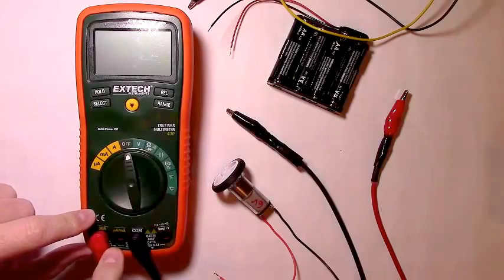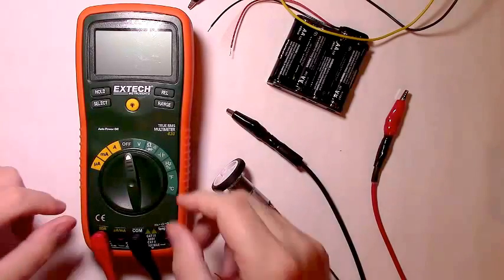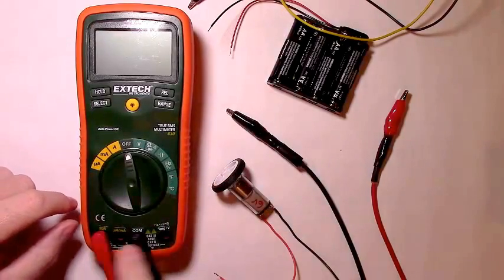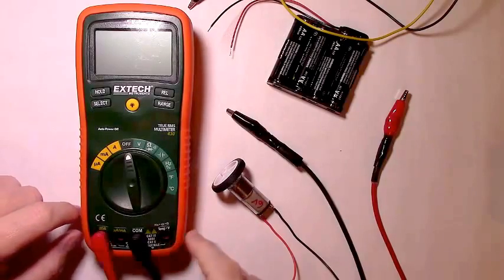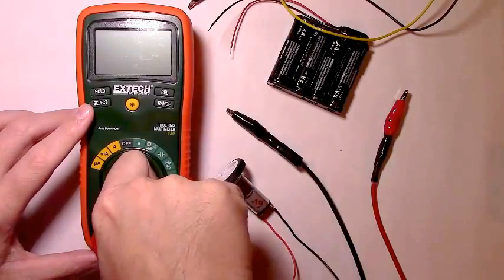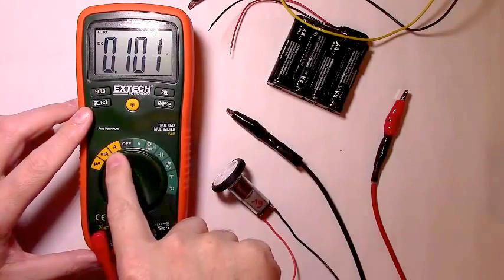Until you know what the draw is actually going to be, err on the side of caution. Go to larger and then you can turn your meter on to the amp setting.